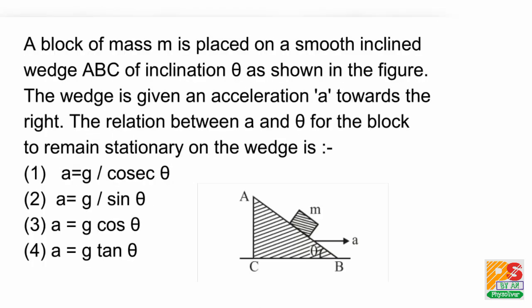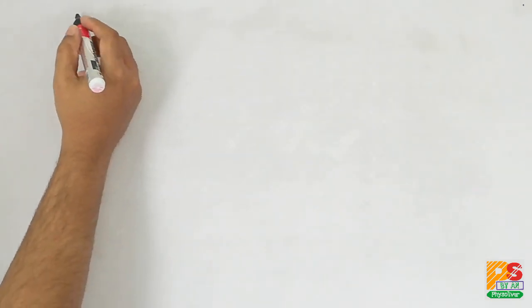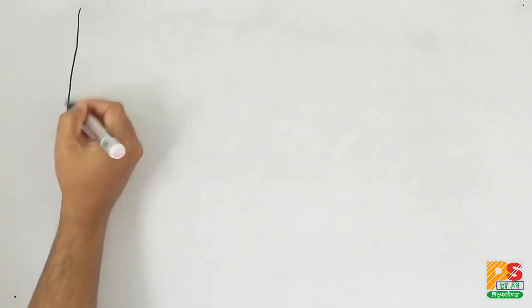In this question, a block of mass M is kept on a smooth inclined plane as shown. The angle of inclination is theta. We have to find the acceleration of the wedge which would keep the block stationary on the wedge. Now let's draw the diagram again.